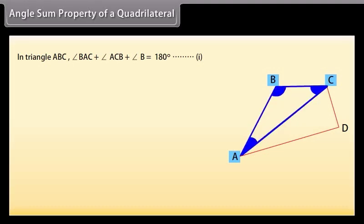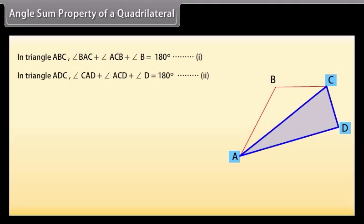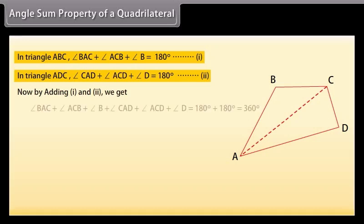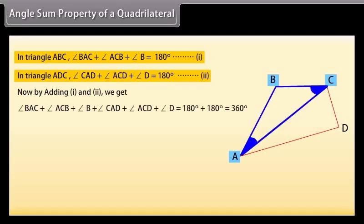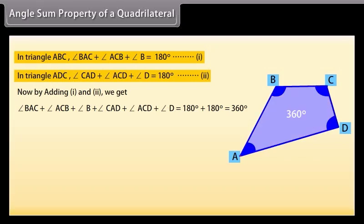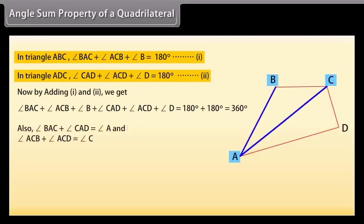Therefore, in triangle ABC: angle BAC + angle ACB + angle B = 180°, mark it as (1). Similarly, in triangle ADC: angle CAD + angle ACD + angle D = 180°, mark it as (2). Adding (1) and (2): angle BAC + angle ACB + angle B + angle CAD + angle ACD + angle D = 360°. Also, angle BAC + angle CAD = angle A, and angle ACB + angle ACD = angle C.